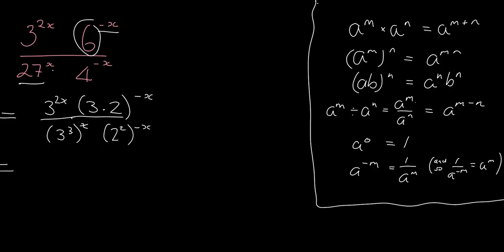Now I can use some rules to help me sort this out. So 3 to the 2x, nothing happens to that. Here, I'm going to apply for this bit here, I'm going to apply this rule. This negative x, the power applies to both the things inside the bracket. So it's 3 to the negative x, 2 to the negative x. That doesn't look very neat, let me just rewrite it. Negative x.